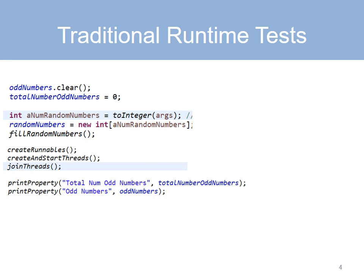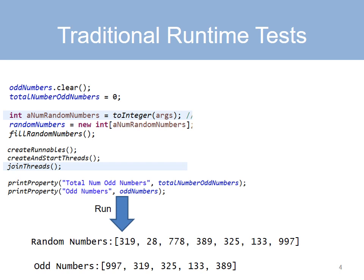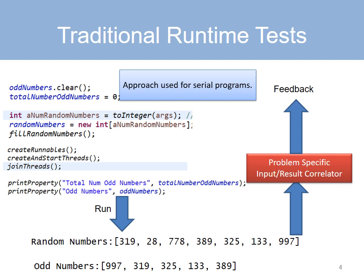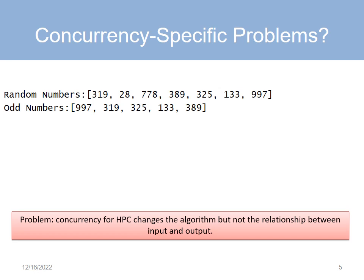The idea of automating checks is of course not new. The typical approach is to take the program, run it with some given input, collect the output, and feed the input and output to a program that checks if the expected output is the same as the actual output. Based on the relationship between input and output, give appropriate feedback. Many of you have probably used this approach for grading serial programs.